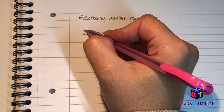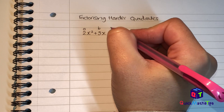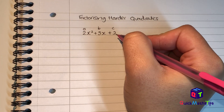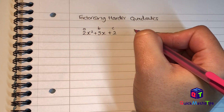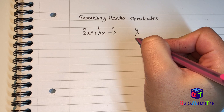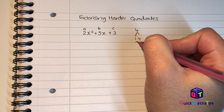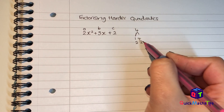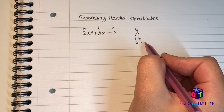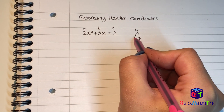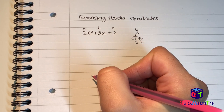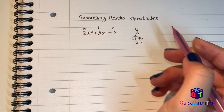The first thing I'm going to do: this is my a value, this is my b value, this is my c value. I'm going to multiply together my a and my c — in this case 2 multiplied by 2, which gives me 4. The factors of 4 are 1 and 4, and 2 and 2. I need two factors that add to give me b, which is 5 — positive 4 and positive 1 give me positive 5. But I'm not going to put them into my brackets straight away.